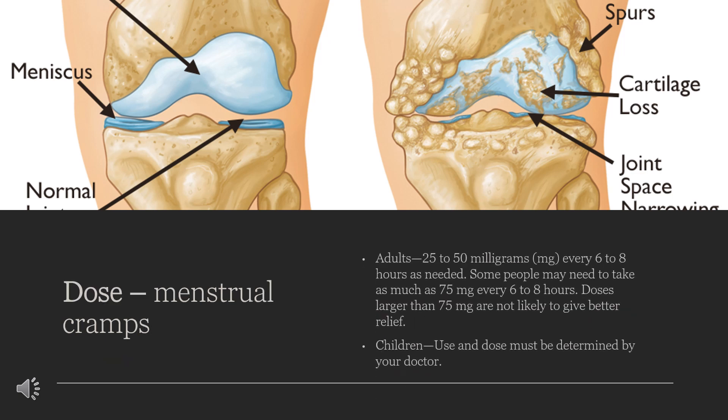For mild to moderate pain or menstrual cramps: Adults — 25 to 50 mg every 6 to 8 hours as needed. Some people may need to take as much as 75 mg every 6 to 8 hours. Doses larger than 75 mg are not likely to give better relief. Children: use and dose must be determined by your doctor.